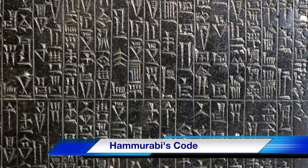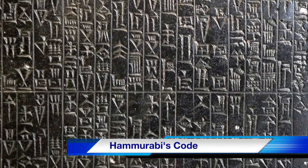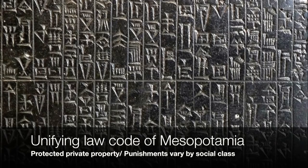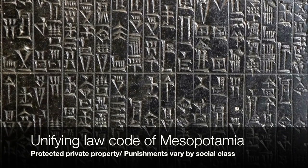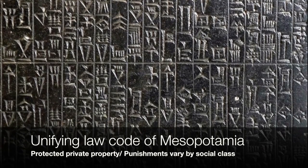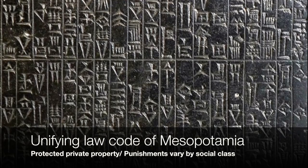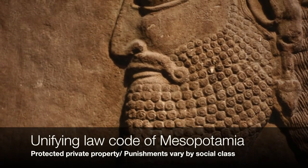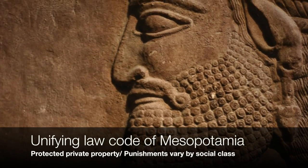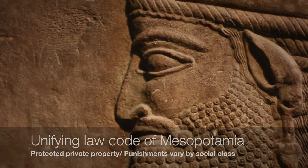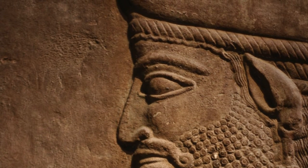Next up, Hammurabi's Code. It was the unifying law code of ancient Mesopotamia, and the reason it was important was because it was one of the first law codes in history that was written down — that's the record-keeping part of SCAR. It was also important because it treated people differently based on their social classes, which is actually a pretty old type of law.